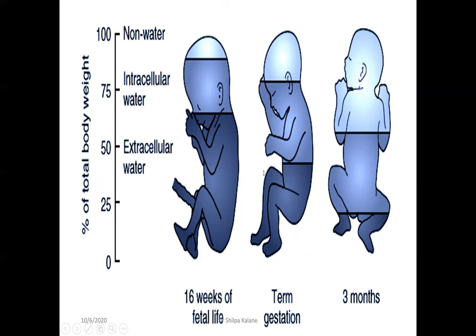Knowing this is important for two reasons. First, it makes fluid management easier — we understand the physiological needs of the baby. Second, a baby born at 29 weeks has more extracellular water compartment compared to a term baby. Hence, tight fluid balance and preventing insensible water loss becomes extremely essential in preterm babies.